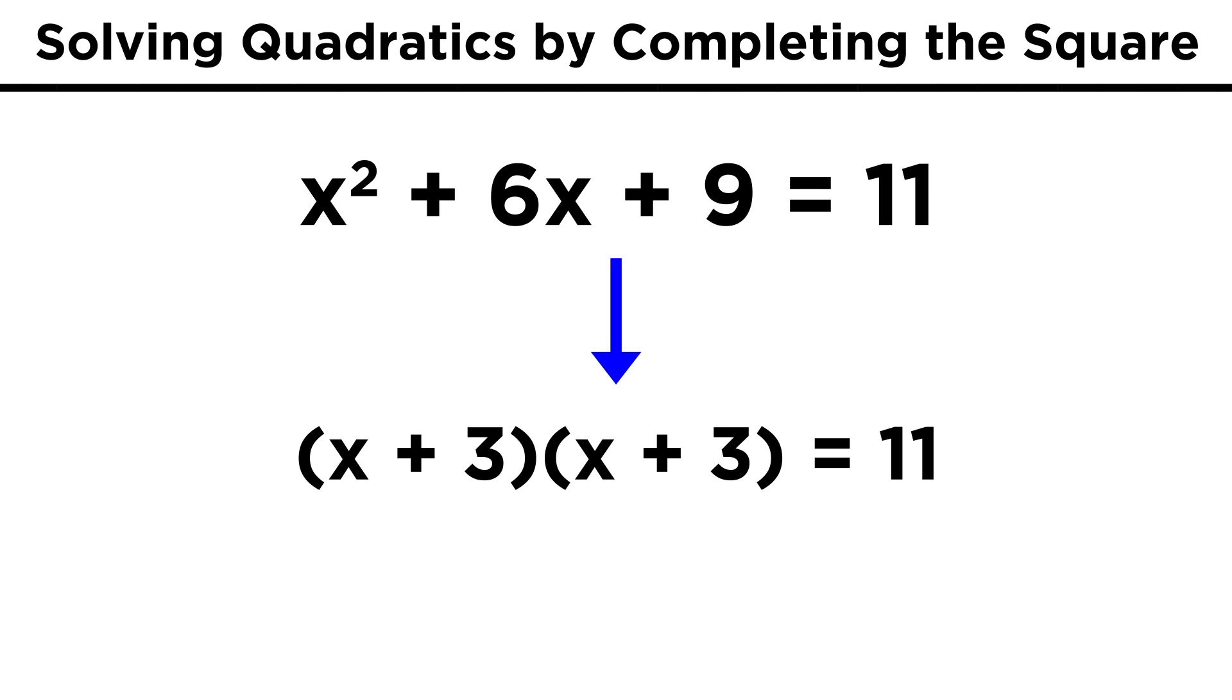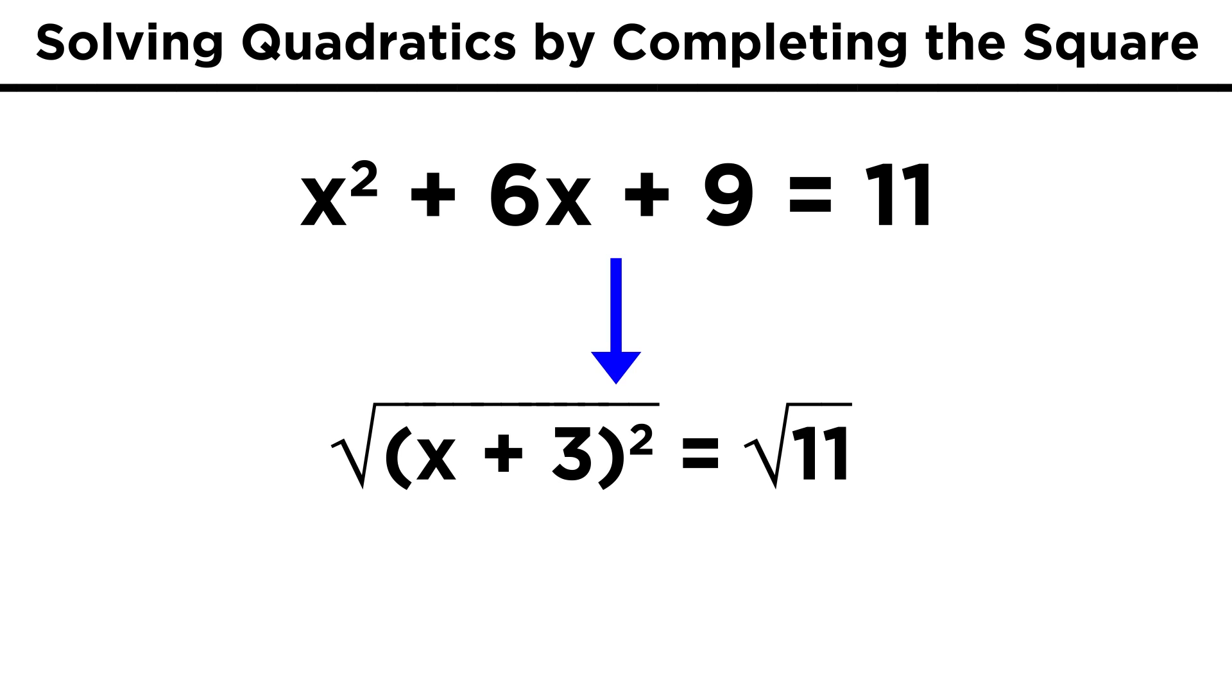Now we do have a perfect square, so we get x plus 3 quantity squared equals 11. Take the square root and subtract 3, and we get x equals root 11 minus 3, or negative root 11 minus 3.